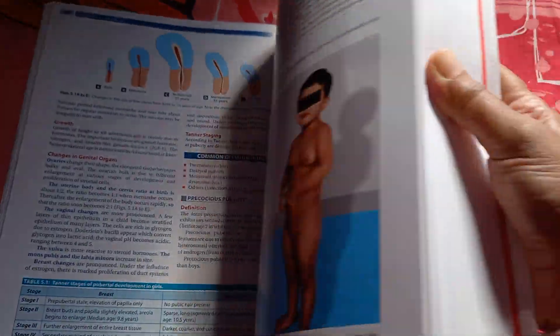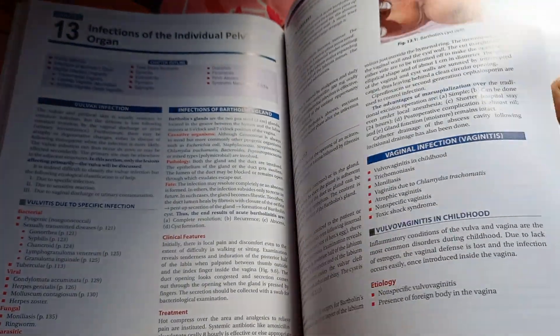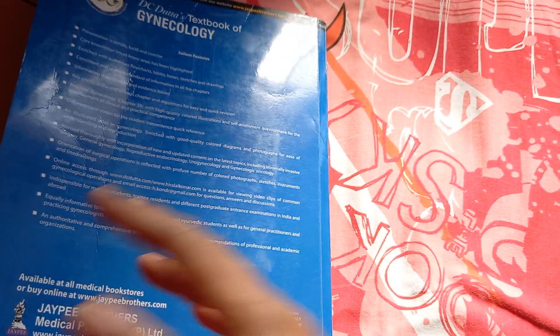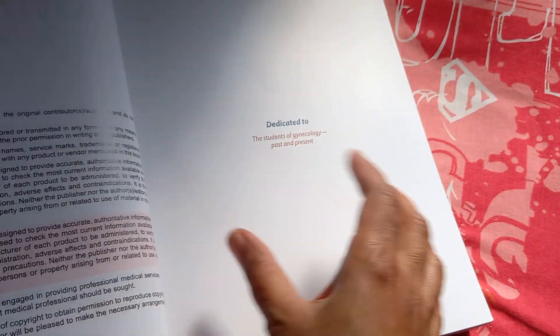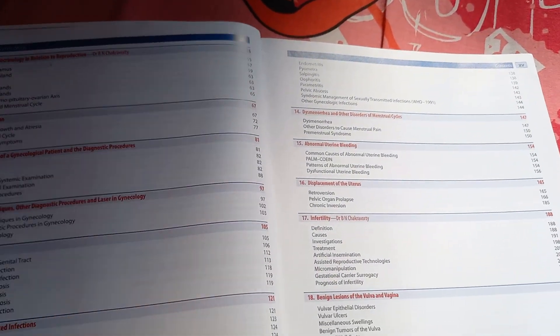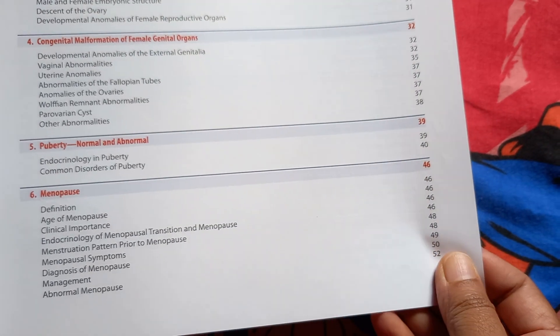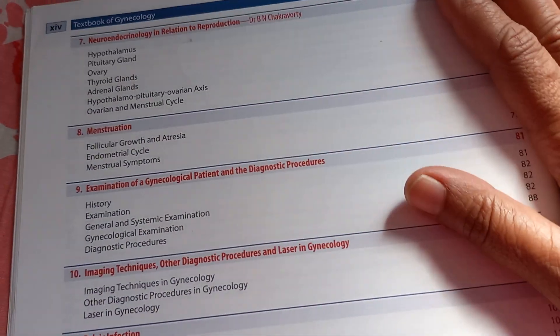Let us look inside this book now and at its contents. Mainly in gynecology, you should know about bleeding — abnormal uterine bleeding. That is the most important thing you should know.